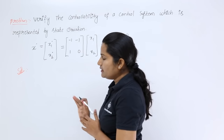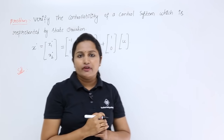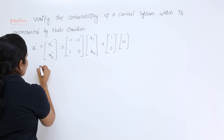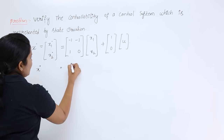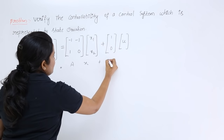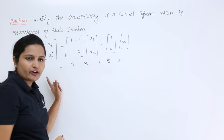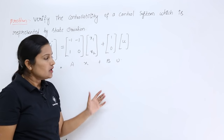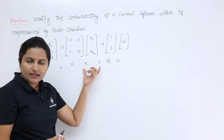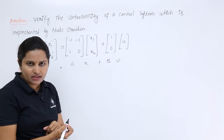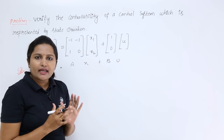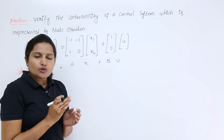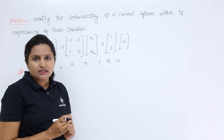Whenever they give a state equation, we need to compare it with the fundamental state equation, that is x-dot = Ax + Bu. Our aim is to find out the controllability of the control system, and here we are going to follow the Kalman's controllability test.